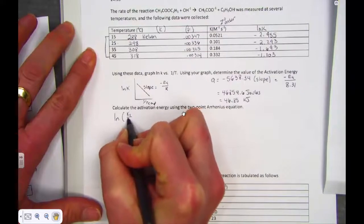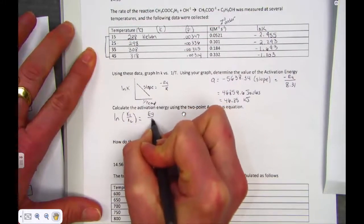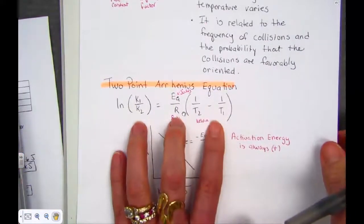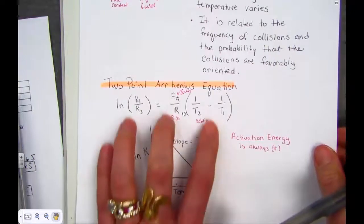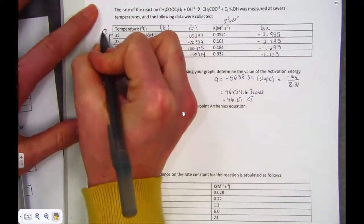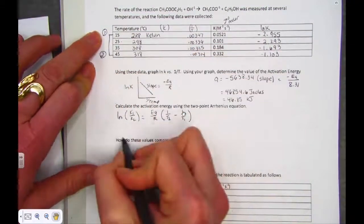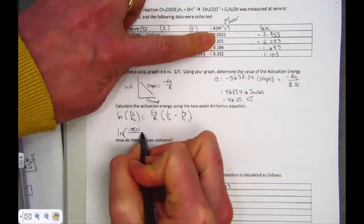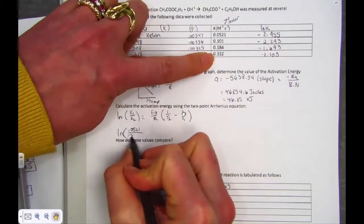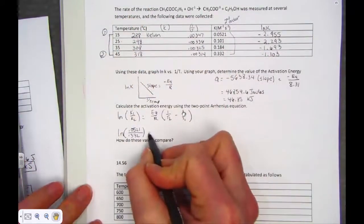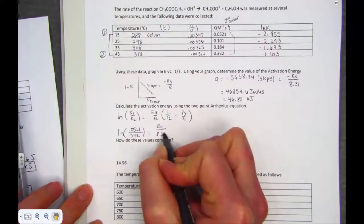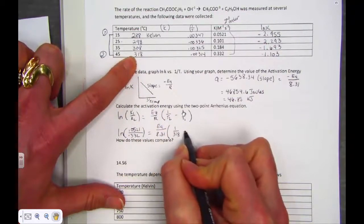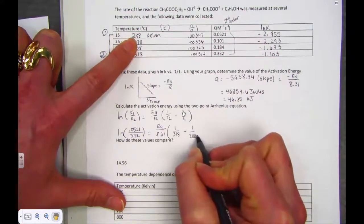The natural log of k1 over k2 is equal to Ea over R times the reciprocal of T2 minus T1. All I've done so far is just copied my equation, the two-point Arrhenius equation. So instead of graphing, we'll plug numbers in. Let's call this trial 1 and this will be trial 2, the farthest points possible. So the natural log of k1, 0.0521, over k at time 2 here, so 0.332. Equals, we're trying to solve for Ea, 8.31 is our R constant. T2, Kelvin temperature, 1 over 318 minus 1 over 288 Kelvin units.